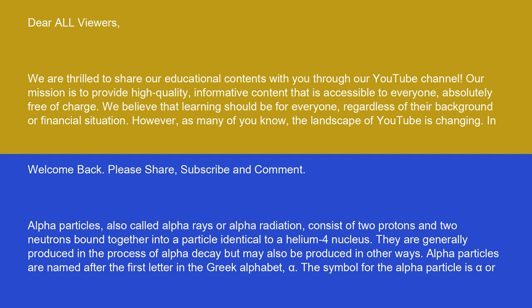They are generally produced in the process of alpha decay, but may also be produced in other ways. Alpha particles are named after the first letter in the Greek alphabet, alpha. The symbol for the alpha particle is α or α²⁺.